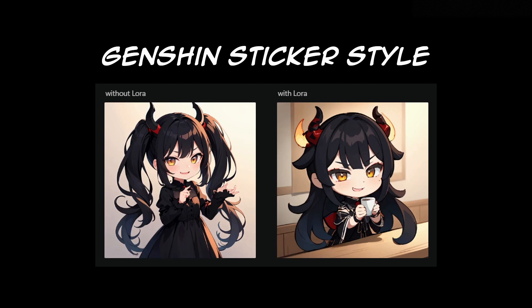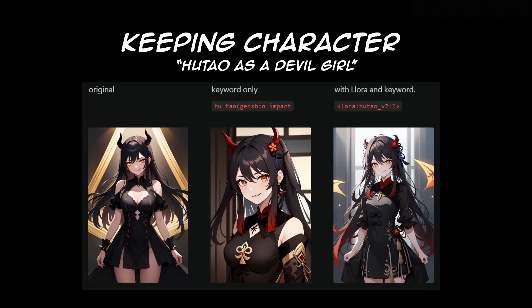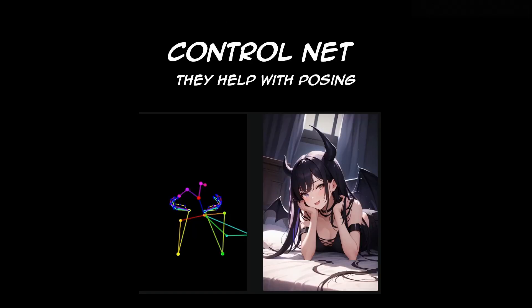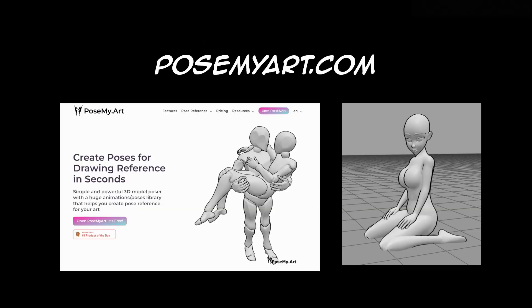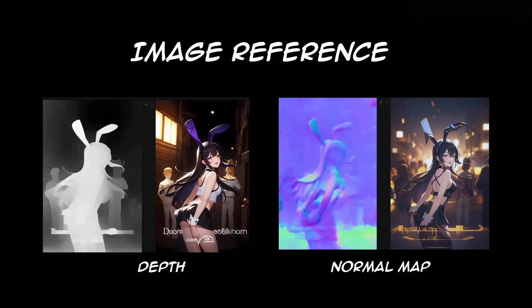For example, if you want to generate art like Genshin stickers, you can do that. Or like a tarot card style. You can even keep consistent characters with them, or keep concepts such as expressions. ControlNet — they help with posing. To generate poses, I recommend posemyart.com. Or you can just use image references. Here are some examples of what ControlNet does.